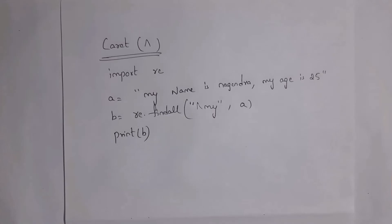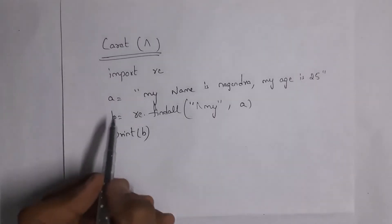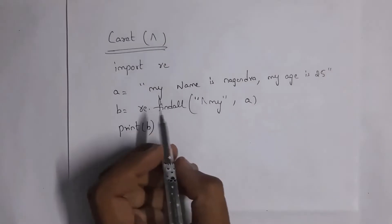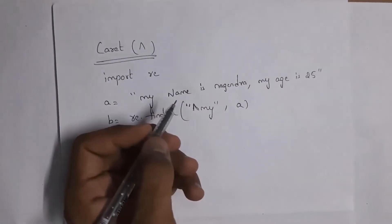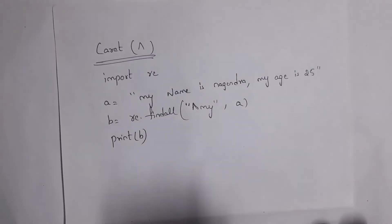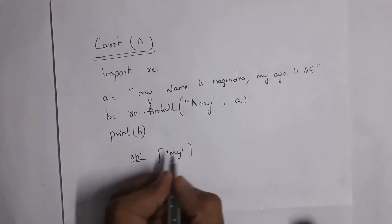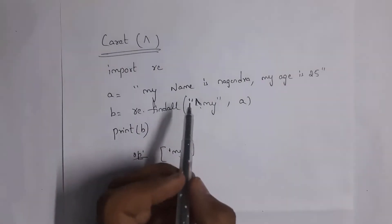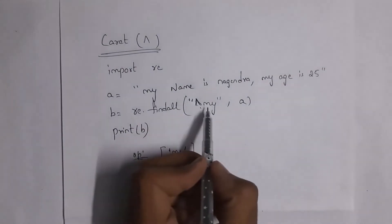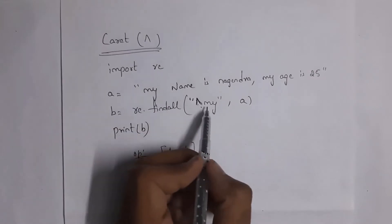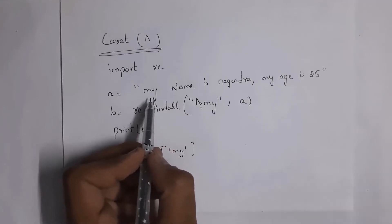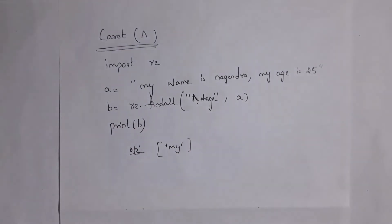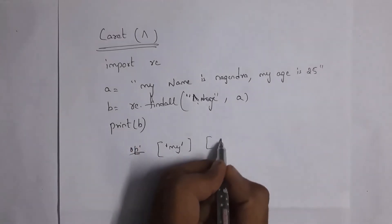Next I will explain the use of caret symbol outside square brackets. Using re.findall with pattern '^my', it checks whether 'my' is available at the start of the string. Since 'my' is at the start, the output is ['my']. If I write '^name', name is not at the start, so it returns an empty list. Note: caret inside square brackets means complement, but caret outside means start of string.